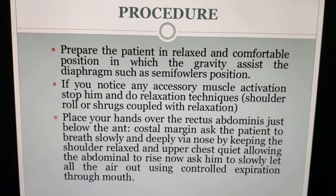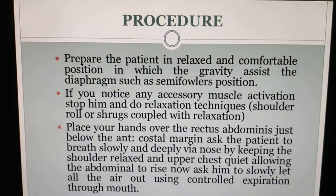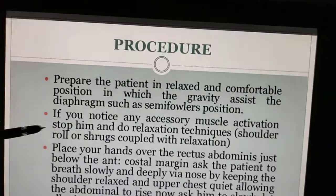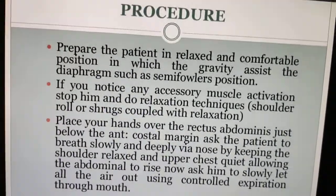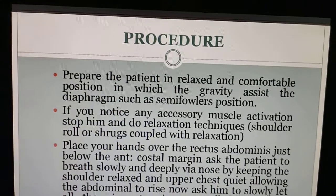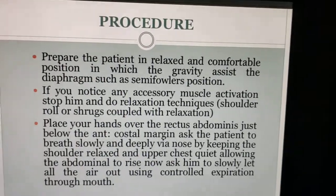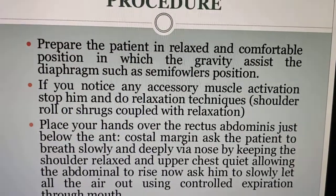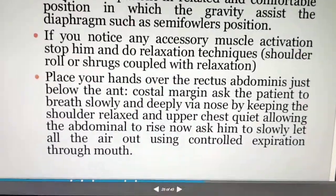If you notice any accessory muscle activation or difficulty, tell the patient to relax quietly. Place one hand over the rectus abdominis just below the anterior costal margin, and the other hand on the upper chest. I will show the exact hand placement in the video.